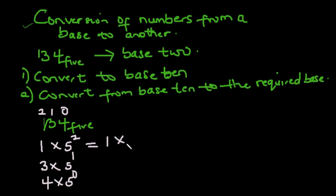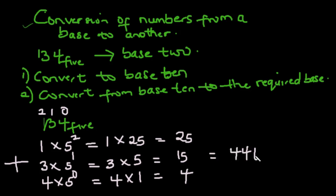This equals to 1, 5 to the power of 2 is 25, 5 to the power of 1 is 5, and 5 to the power of 0 is 1. Anything raised to power 0 in mathematics is 1. So this is 25, 3 multiplied by 5 is 15, and this is 4. We add all of them together, and that would give us 25 plus 15 that's 40 plus 4 that's 44 in base 10.